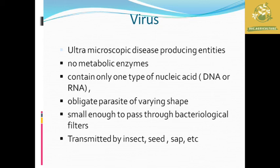What is a virus? It is said to be known as the ultra-microscopic disease-producing entities. Regarding the characteristics of virus, they do not have any metabolic activity compared to our microorganisms. They can contain only one type of nucleic acid, which can either be DNA or RNA. They are said to be obligate type of parasites of varying shapes.